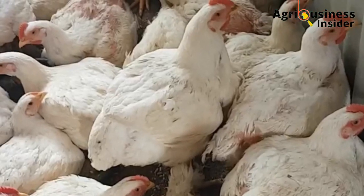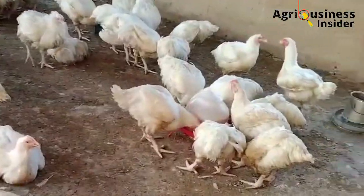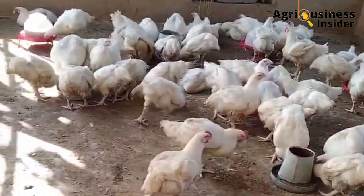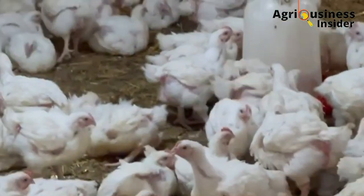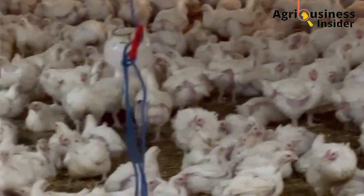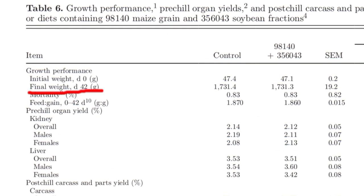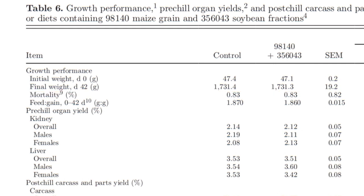Studies have also been done in broilers, and the results are similar to those of the layers. There were no significant differences in final body weight, weight gain, organ yield, and carcass yield between broilers fed the genetically modified maize and soybeans versus those fed commercial maize and soybean. For example, on the growth performance table, the final weight at day 42 for the control was 1,741.4 grams and for the genetically modified maize and soybean it was 1,741.3 grams. Mortality rates were the same, and the feed conversion ratio had a difference of only 0.07.